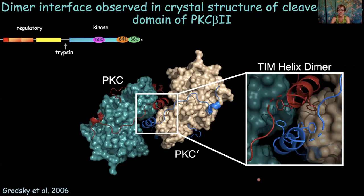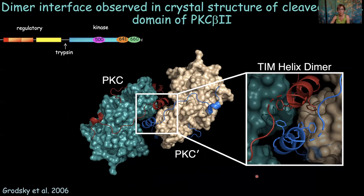Now I'm going to tell you about PKC and dimerization before I wrap up. Susan Taylor has been asking me for years whether PKC is a dimer, and I kept telling her no. The mature PKC that's fully phosphorylated is a monomer — size exclusion, single molecule, biophysical analyses all confirm that mature PKC is definitely a monomer. But we never thought about whether the unphosphorylated enzyme could be a dimer.